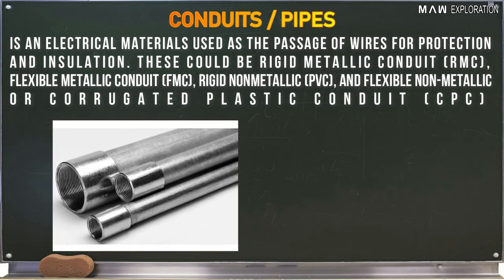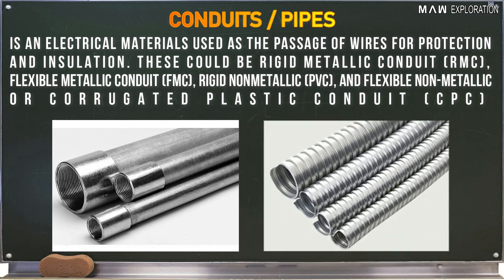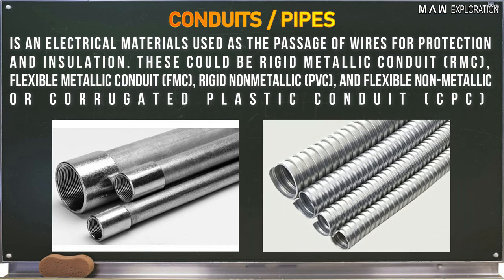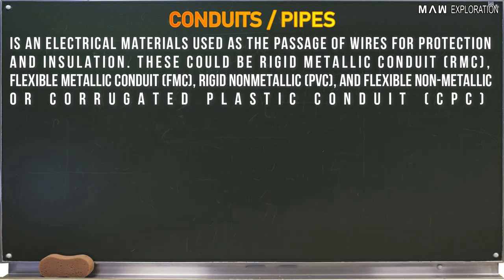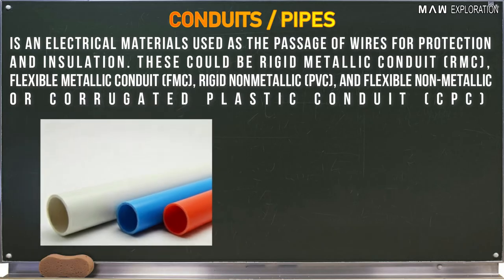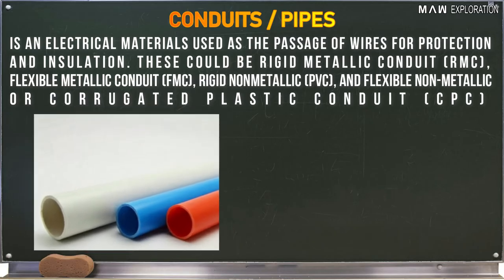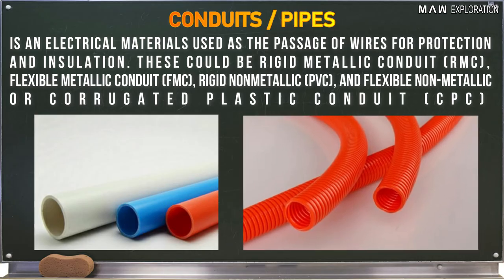Conduit is an electrical material used as the passage of wires for protection and insulation. Types include rigid metallic conduit or RMC, flexible metallic conduit or FMC, and rigid non-metallic conduit or PVC.